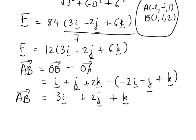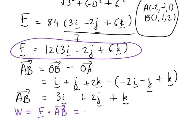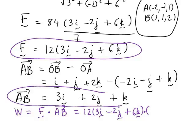So now we can put this together to find the work done. We said that the work done was the dot product of the force with the displacement vector AB. So that is just going to be this vector for the force, 12 times (3i minus 2j plus 6k), in a scalar product with the vector for AB, so 3i plus 2j plus k. That 12 can just stay there, everything will be multiplied by 12. How do we work out the scalar product?